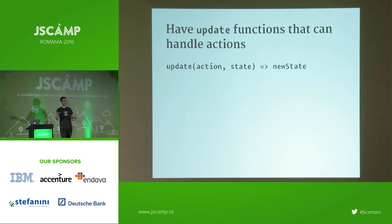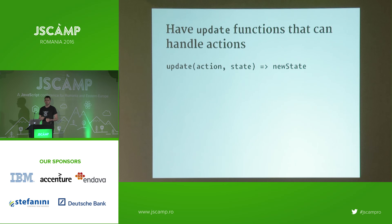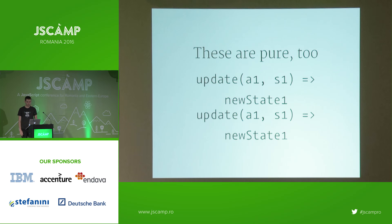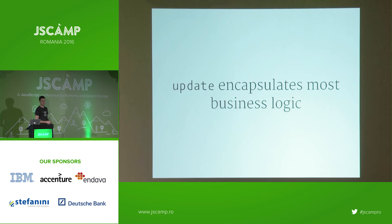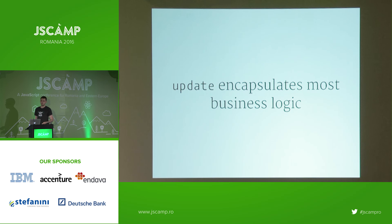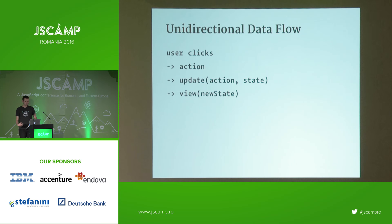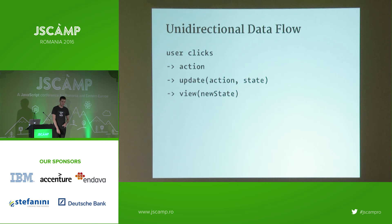The update function encapsulates most of your business logic, so all your logic ends up in a function or functions rather than scattered across different components and files. It lives outside your user interface, which makes it much easier to test. And all of this leads to this unidirectional data flow: the user clicks, that sends an action, that triggers an update, and then the view renders the HTML.